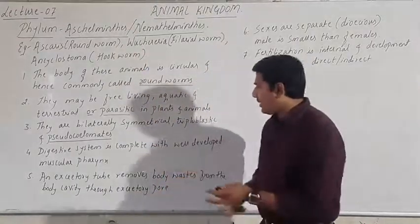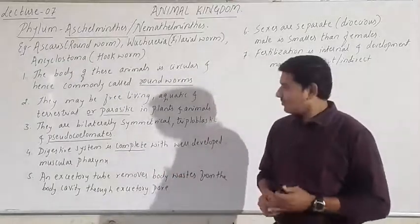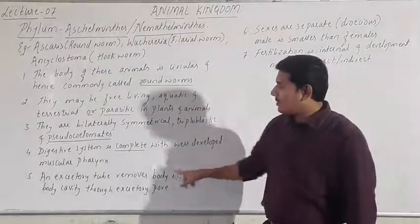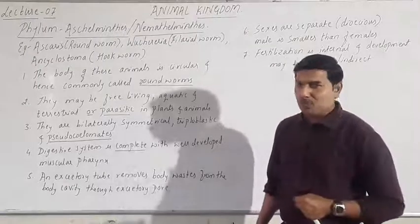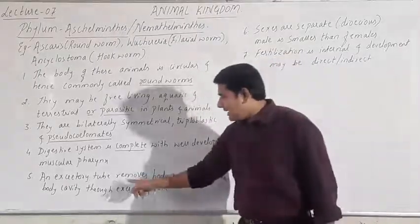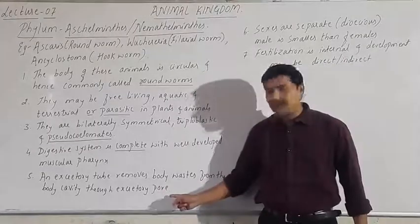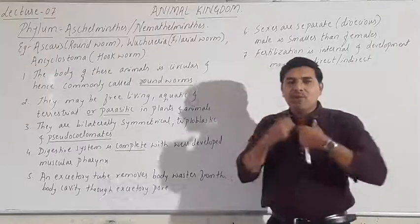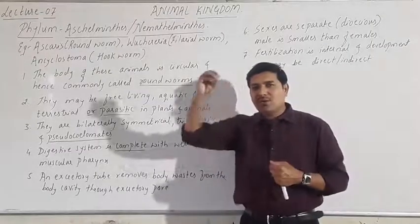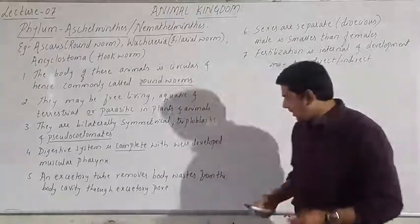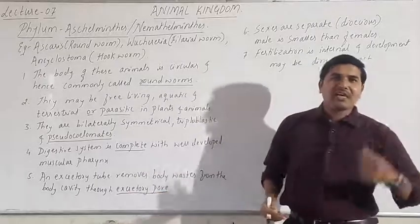The digestive system is complete — this is most important — with a well-developed muscular pharynx. They have the pharynx through which they can suck food particles. An excretory tube removes body waste from the body cavity through the excretory pore, through which nitrogenous waste material is removed.